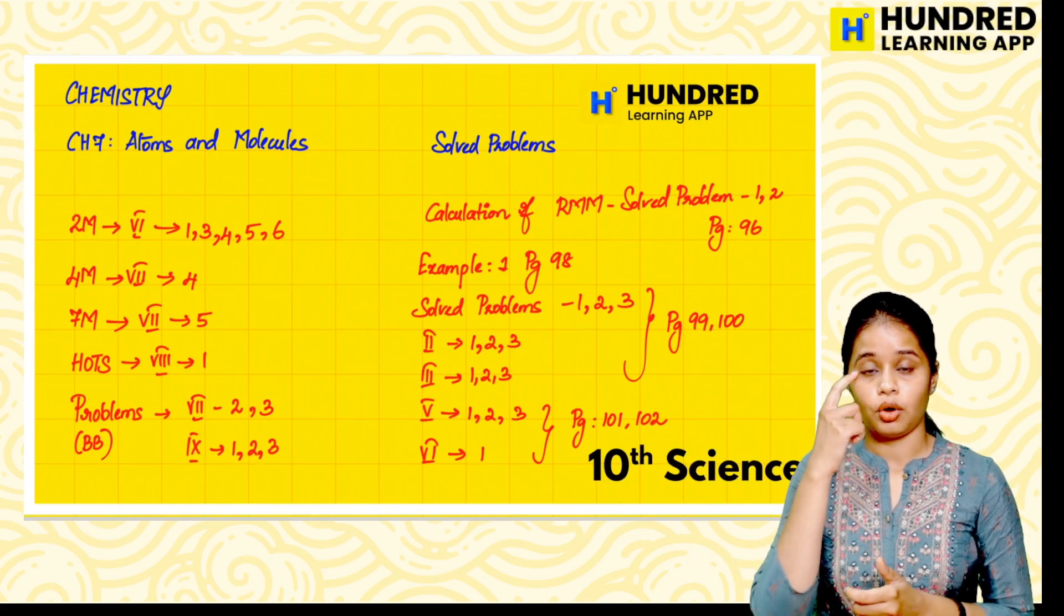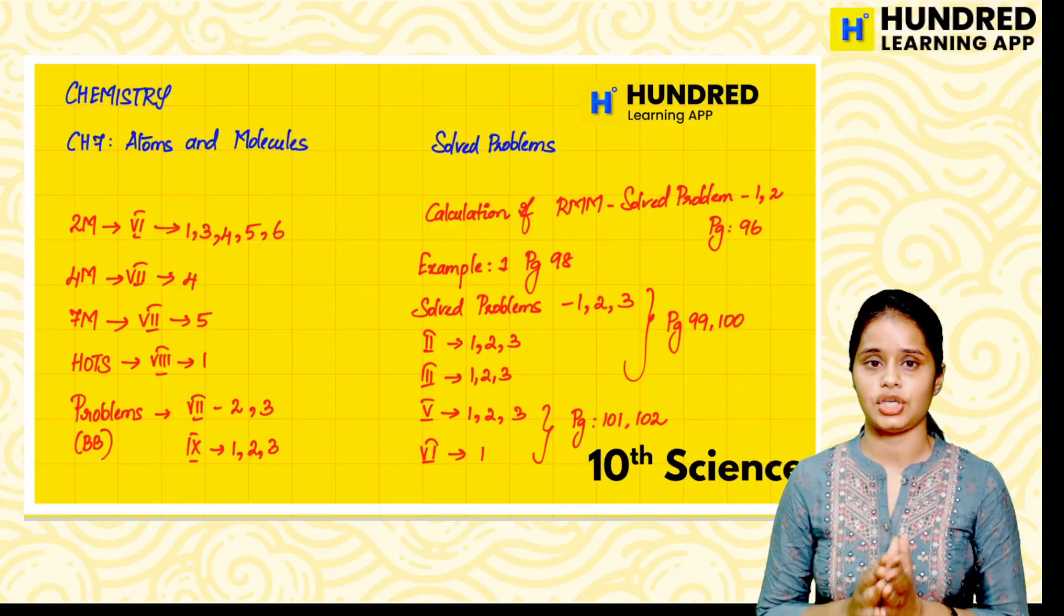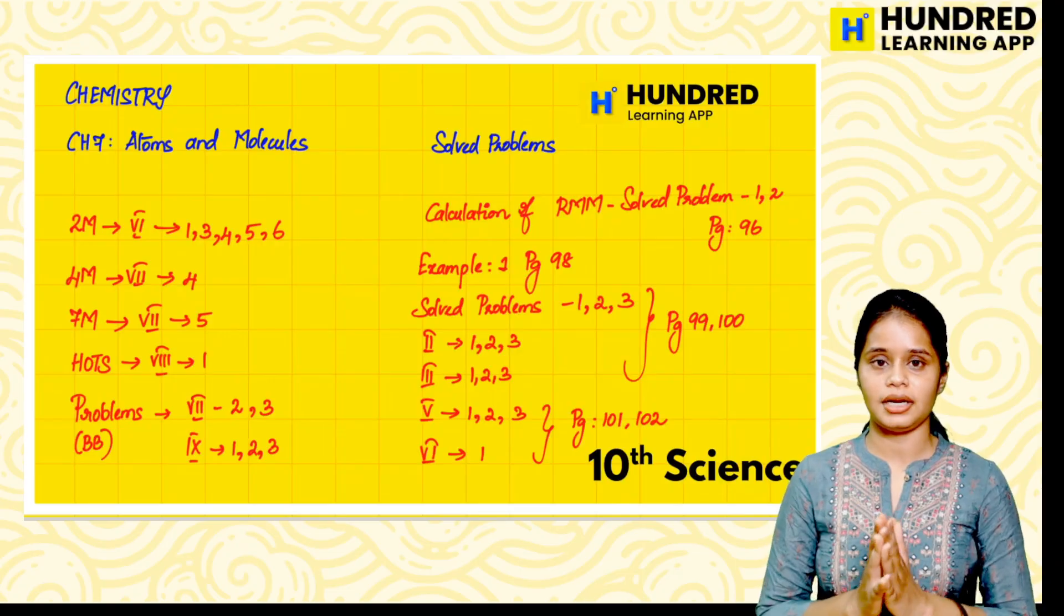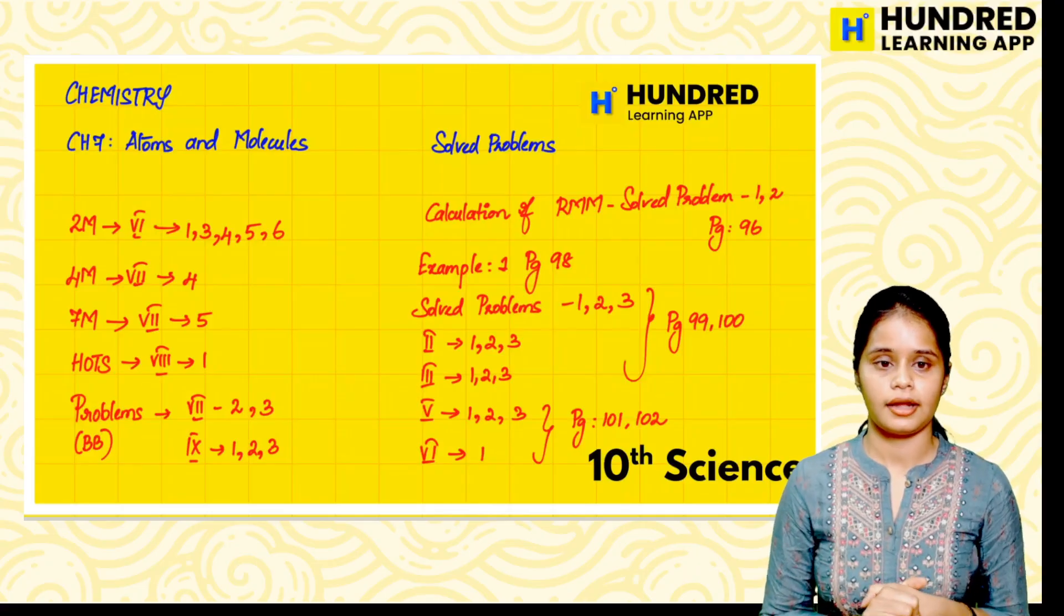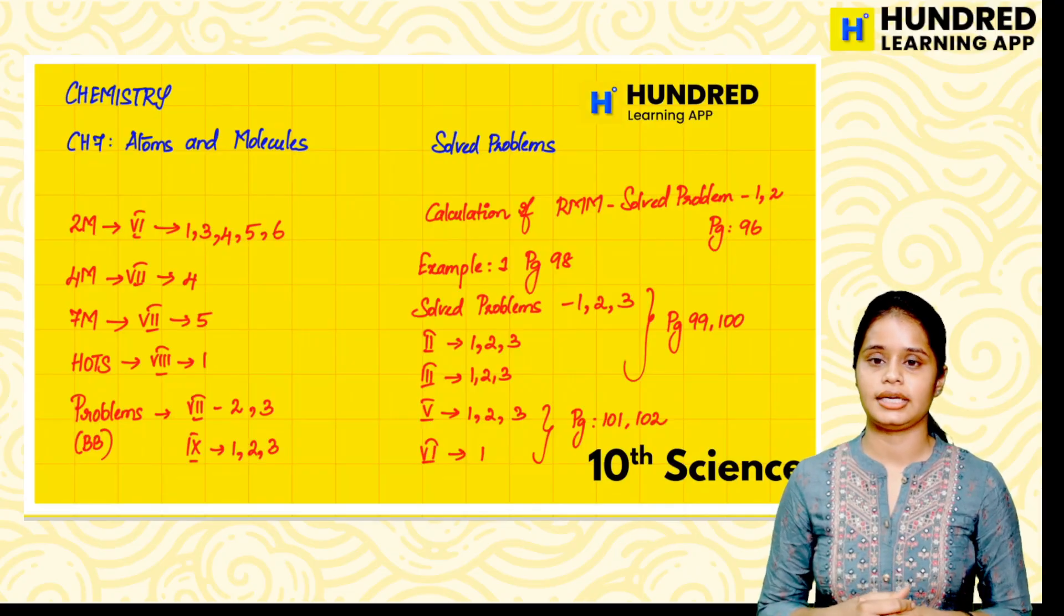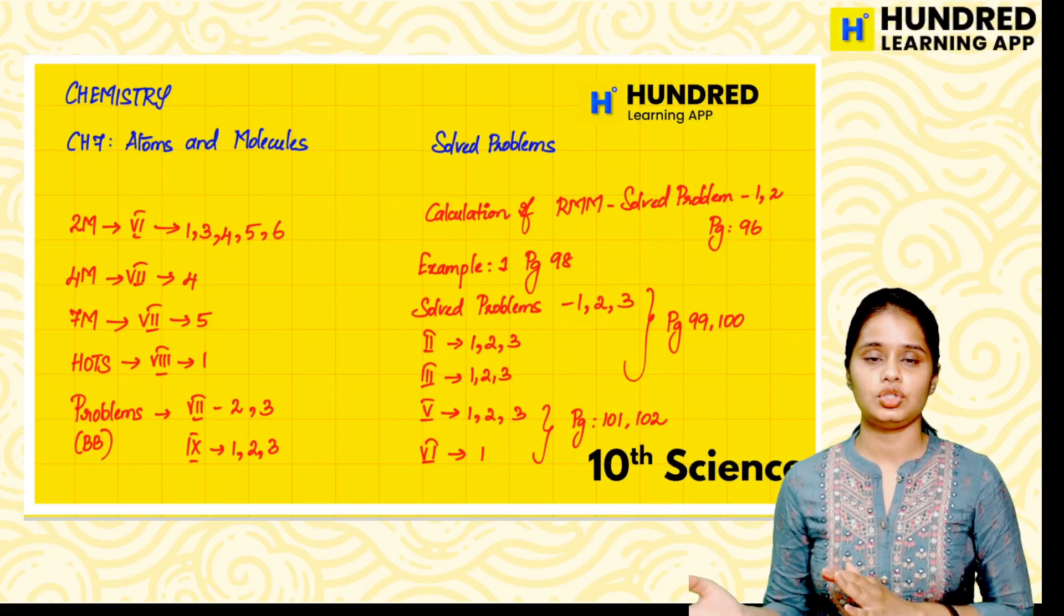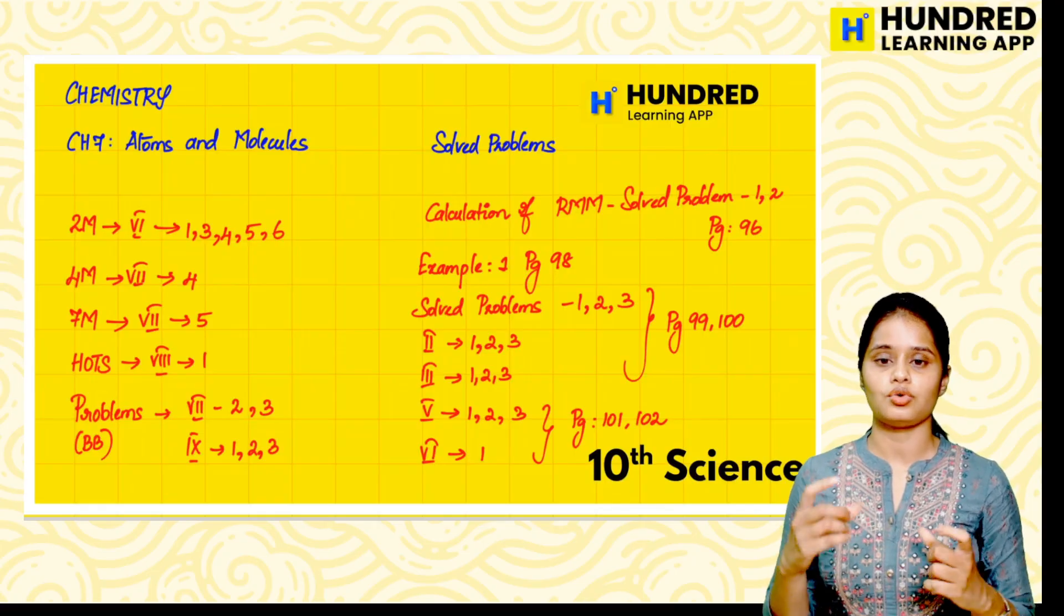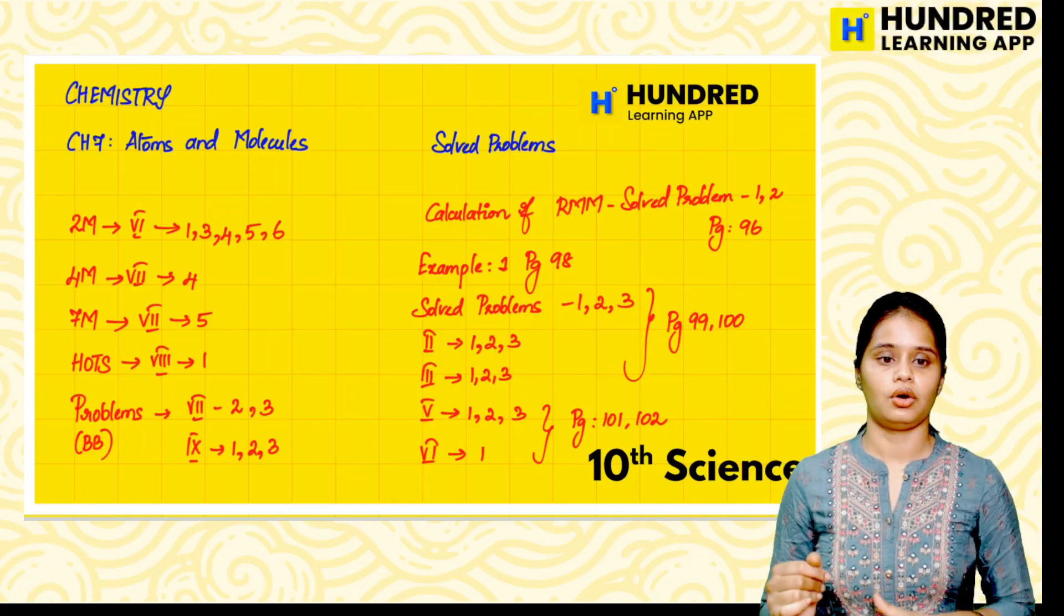Next is our chemistry. Atoms and Molecules - there are three chapters. Chapter 7 and 9 are very important. The eighth chapter is very small, like thermal physics, so we can do it in less time. We have to calculate the relative molecular mass question. We have to solve the problems and try to find out all of those things.